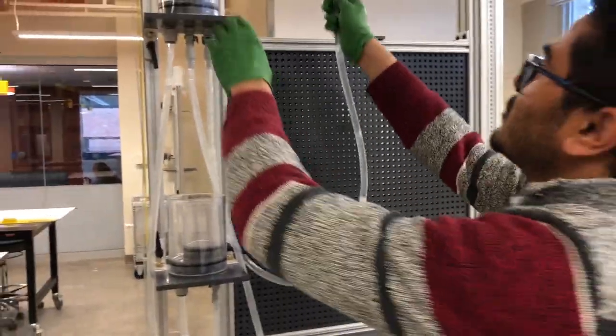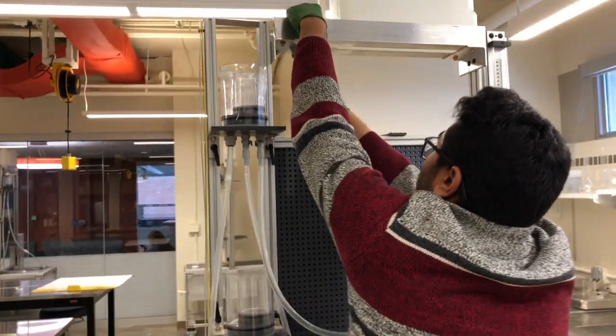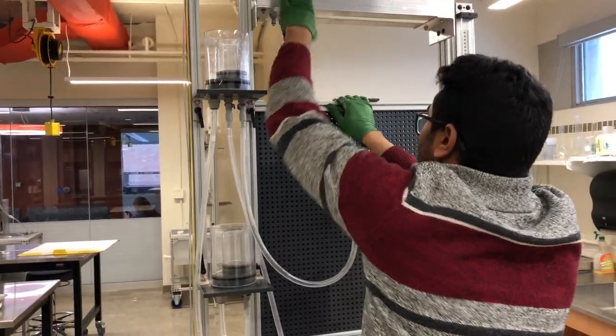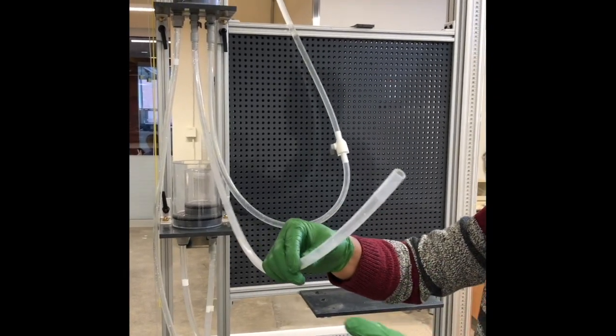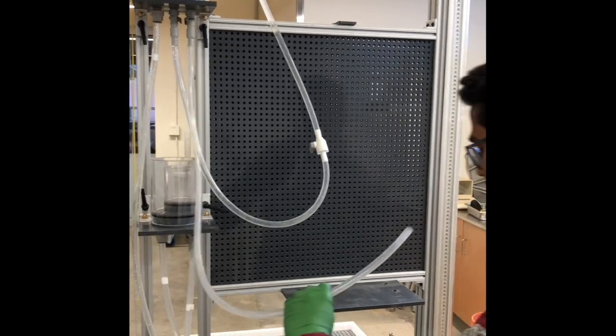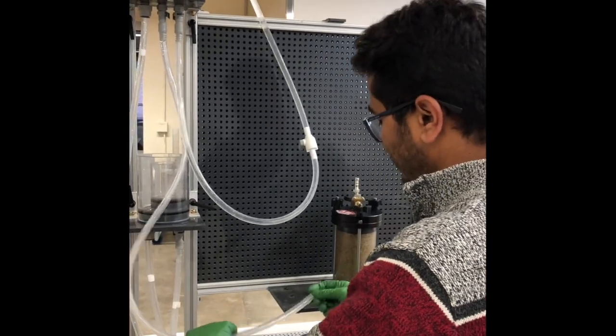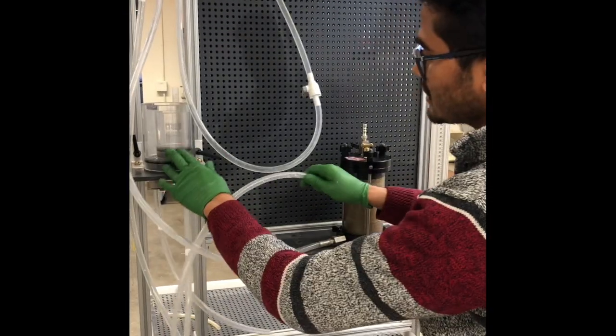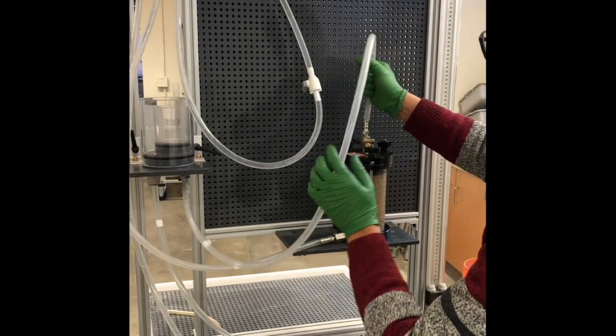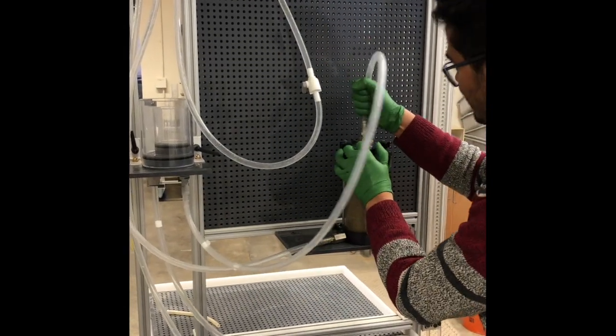Connect R1 to the top reservoir. C1 will be connected to the bottom port of the permeability cell. C2 will connect to the top port of the permeability cell.